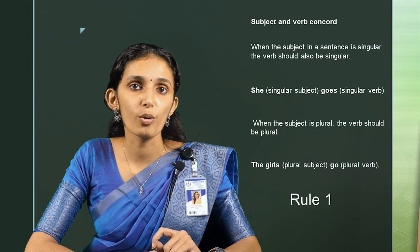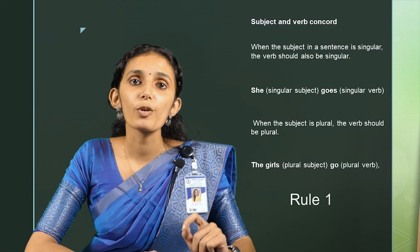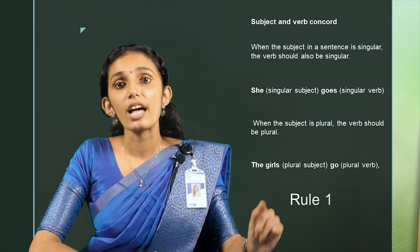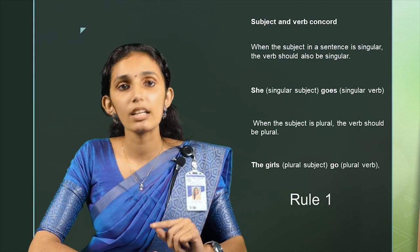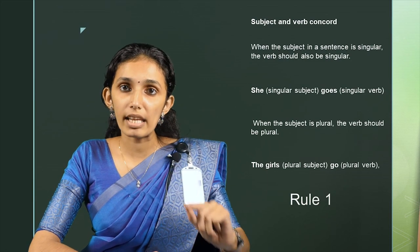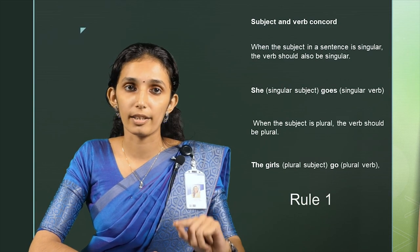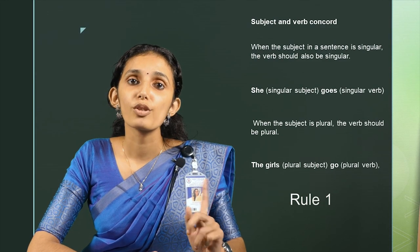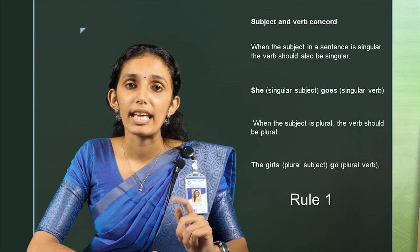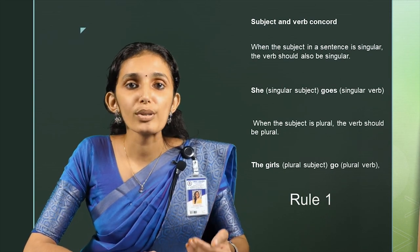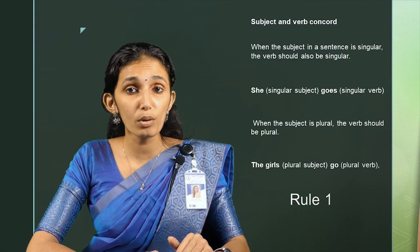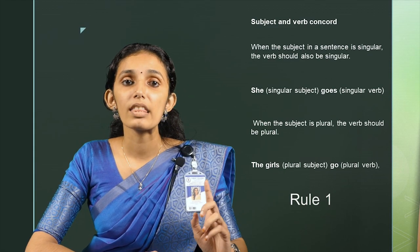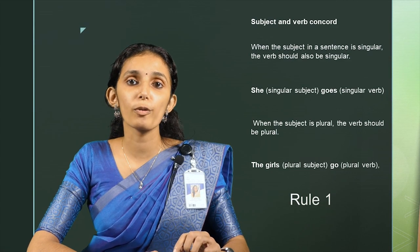Rule number 1: Subject and verb concord. This states that when the subject in a sentence is singular, the verb should also be singular. For example, 'she goes' — she is a singular subject, so it should be followed by a singular verb, 'goes.' This rule also states that when the subject is plural, the verb should be plural. For example, 'the girls go' — the girls, being a plural subject, should be followed by a plural verb.